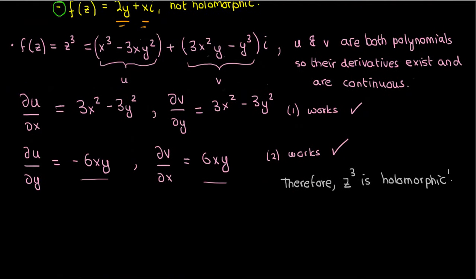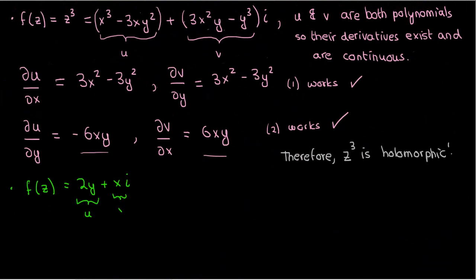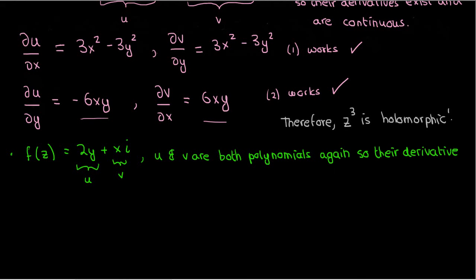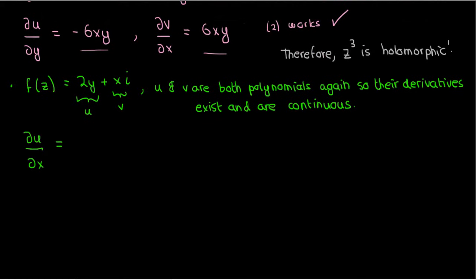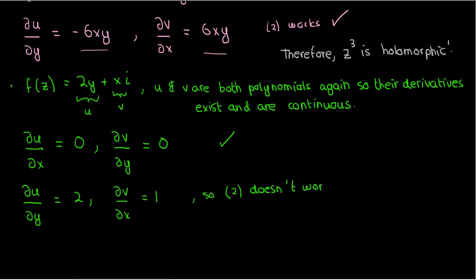Now let's verify that the second example, 2y + xi, is not holomorphic. Again, 2y and x are both continuous and have continuous derivatives, so that's not an issue. Checking the Cauchy-Riemann relations: du/dx = 0 because there's no x in u, and dv/dy = 0 because there's no y in v, so the first relation holds. However, du/dy = 2, and dv/dx = 1. Since these two must be negatives of each other, the second Cauchy-Riemann relation is not satisfied, so we conclude that 2y + xi is not holomorphic.